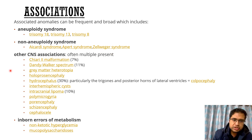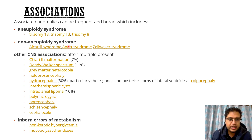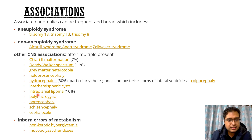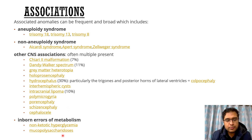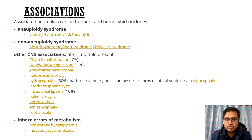Other CNS associations to be remembered and looked for on imaging are: Chiari 2 malformation, Dandy-Walker spectrum, gray-white matter heterotopia, holoprosencephaly, hydrocephalus, interhemispheric cysts, intracranial lipomas, polymicrogyria, and schizencephaly. It can also be associated with inborn errors of metabolism such as non-ketotic hyperglycemia and mucopolysaccharidosis.